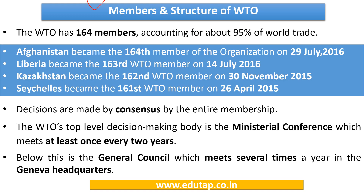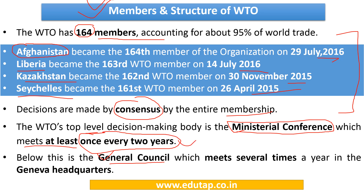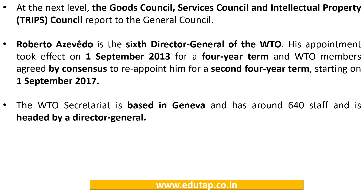This is a very important slide from an exam point of view. Presently WTO has 164 members, with Afghanistan becoming its latest member in 2016. Remember the names of all 4 recent member countries and their respective year of joining. All decisions are made by consensus among member countries. The Ministerial Conference is the top-level decision-making body followed by the General Council. Below the General Council there are the Goods Council, Services Council, and Intellectual Property Council.